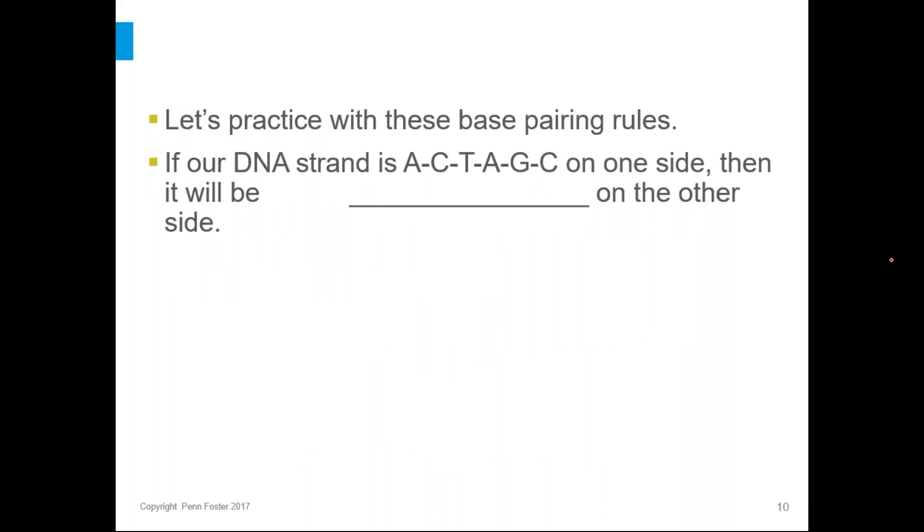So we're going to practice with these base pairing rules because this is how we can move to the next part of DNA is we have to understand this. So let's say we have a DNA strand with A, C, T, A, G, C on one side. So let's think about what it would be on the other. So remember our base pairing rules for a minute. I'll give you a few seconds to think about it before I show you the answers.